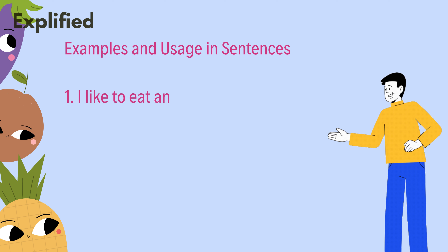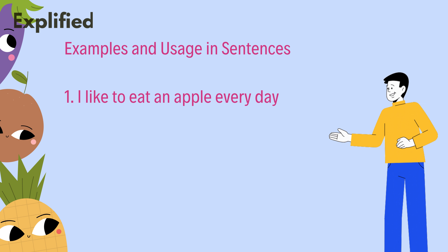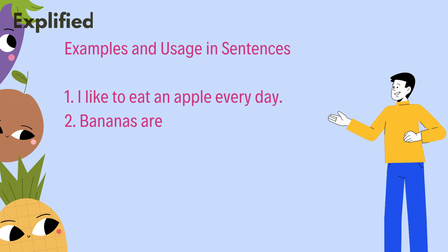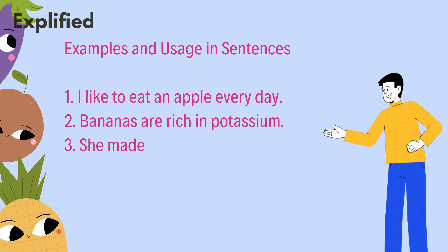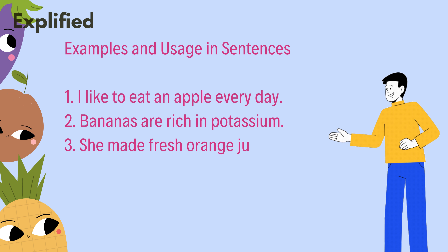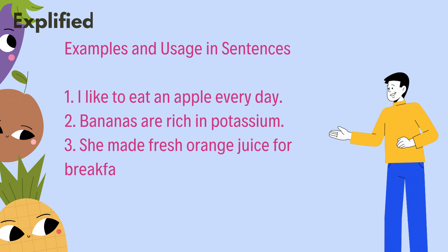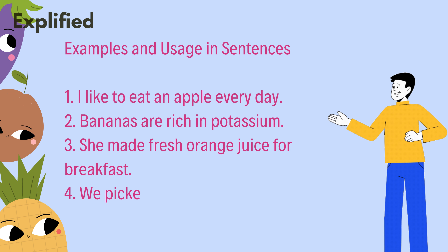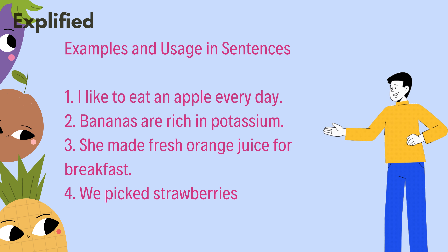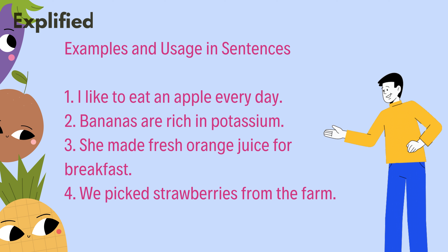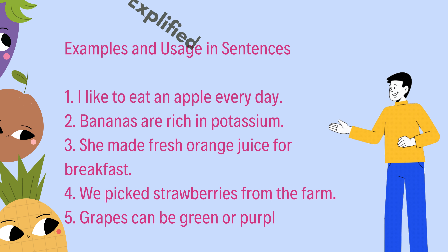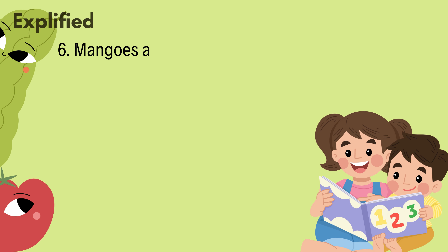Examples and usage in sentences. I like to eat an apple every day. Bananas are rich in potassium. She made fresh orange juice for breakfast. We picked strawberries from the farm. Grapes can be green or purple.